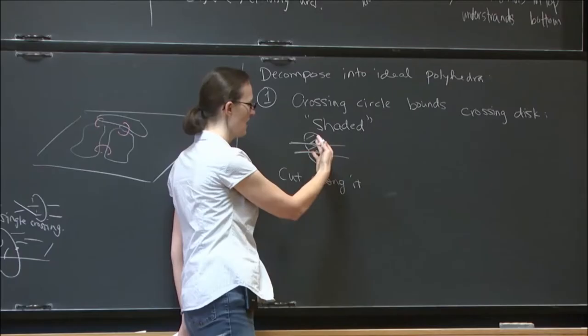Knots are very interesting examples of spaces to look at. If you're trying to examine things in three dimensions, it's useful to have examples you can get your hands on. Knots and their complements — the spaces around them — give you a really wide variety of things that can happen.